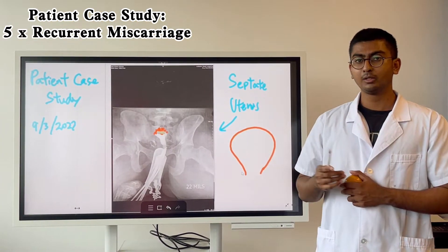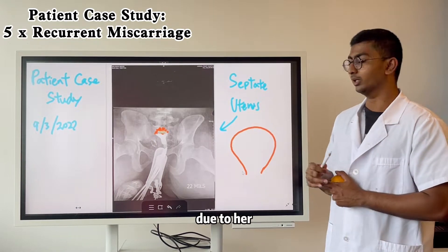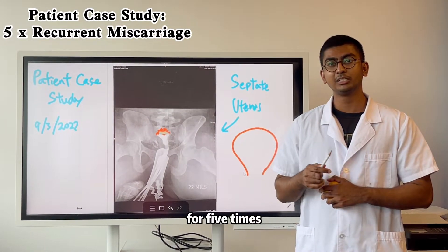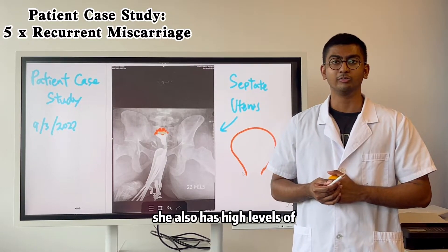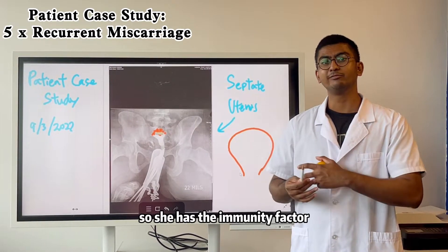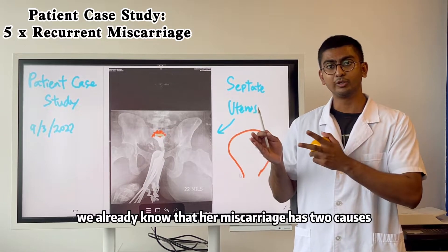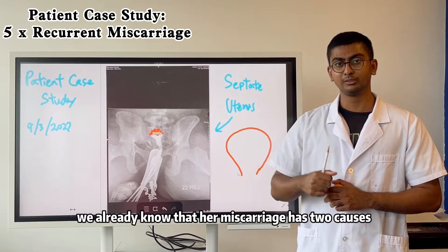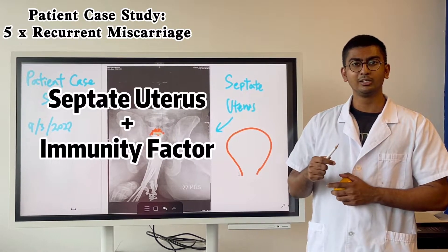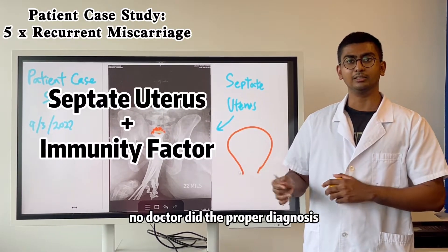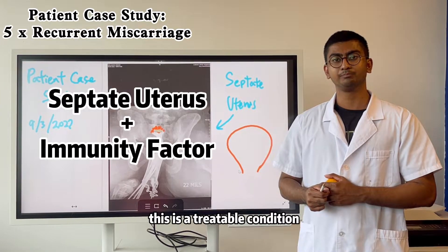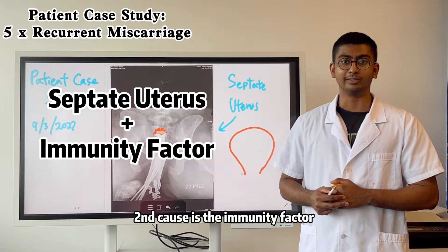This is not the only cause. Due to her repeated miscarriages happening consecutively 5 times, she also has high levels of anti-embryonic antibodies — so she has an immunity factor as well. Clearly, we already know that her miscarriage has two causes. The first cause is this septal uterus that was left undiagnosed with no proper diagnosis done. The second cause is the immunity factor. This is a treatable condition.